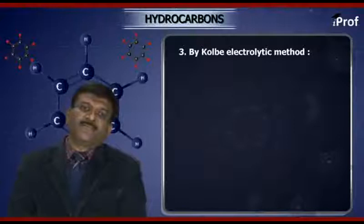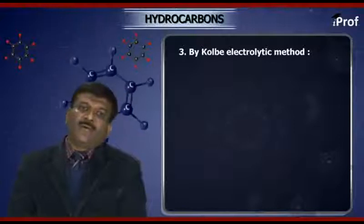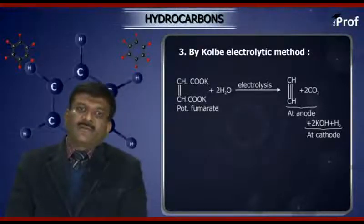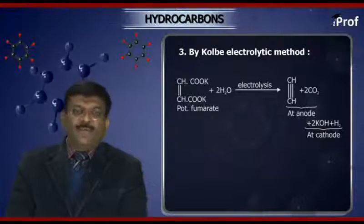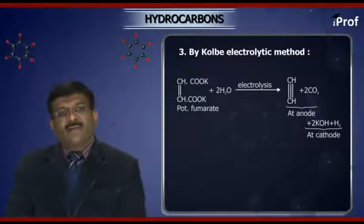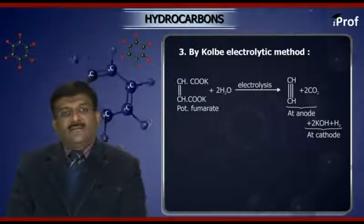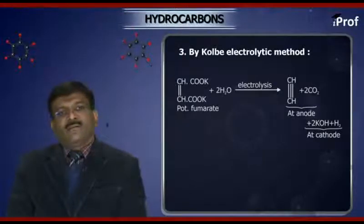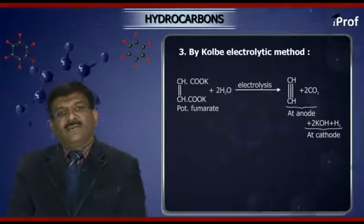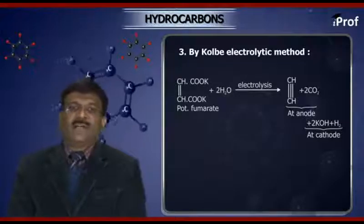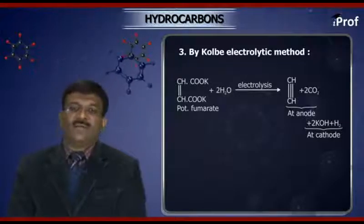Next method: by Kolbe's electrolytic method. Here, potassium fumarate is electrolyzed, which gives the corresponding acetylene or alkyne along with the formation of carbon dioxide gas at the anode and potassium hydroxide and hydrogen gas at the cathode.